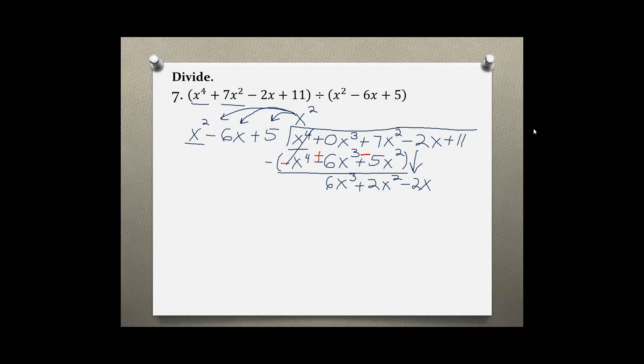And now, starting again, by what do we have to multiply x squared to get 6x cubed? We have to multiply by positive 6x, because 6x times x squared gives us 6x cubed, 6x times negative 6x gives us negative 36x squared, and 6x times 5 gives us positive 30x.